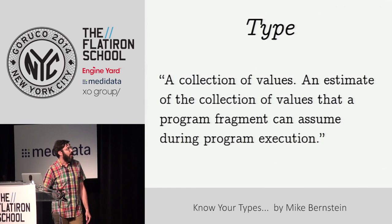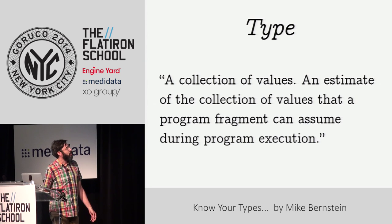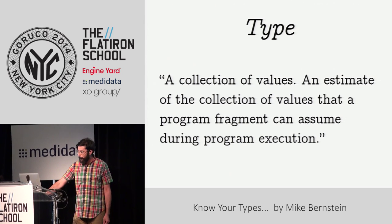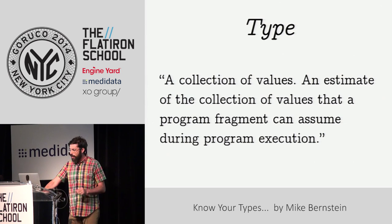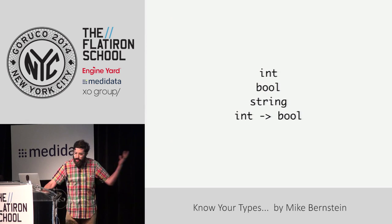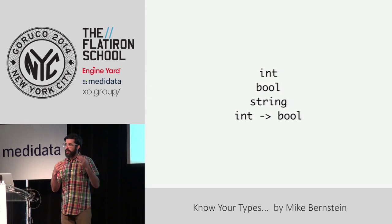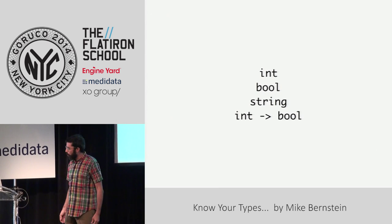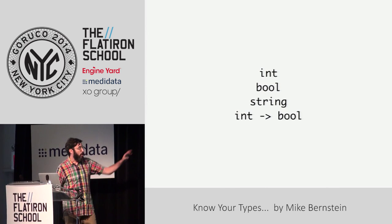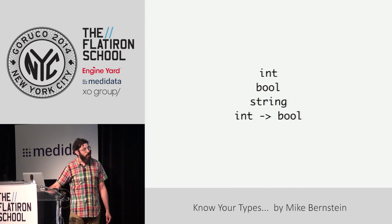A type, according to Cardelli, is a collection of values — an estimate of the collection of values that a program fragment can assume during program execution. Types are representations of values within the semantics and within the actual guts of your programs. Things like int, bool, string, or a function type — a function that accepts an integer and returns a boolean. Here are some types.